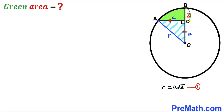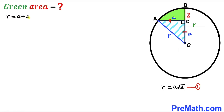OB is also the radius of the circle, labeled r. This radius is the sum of the segment a and the segment of length 2. So we can write r = a + 2.